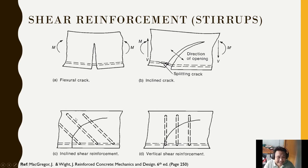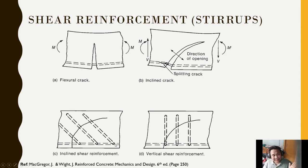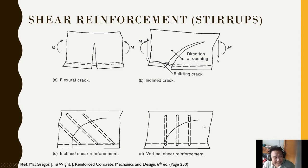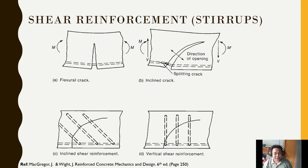Stirrups look like a letter U that wraps around the longitudinal reinforcement. These are the common solutions to prevent inclined or splitting cracks. Since there is always shear force in a beam — not just bending moment — shear stress also occurs. You may recall MC over I for extreme fibers, and VQ over IB for shear stress at other locations. In a beam, we always have both shear and moment.